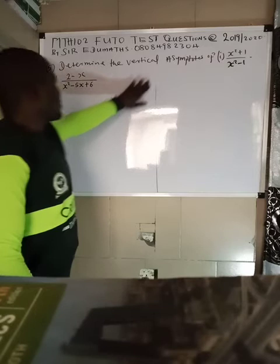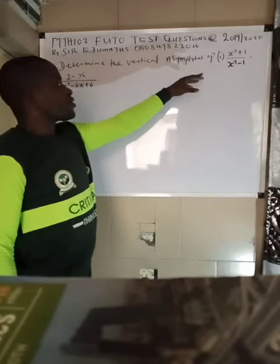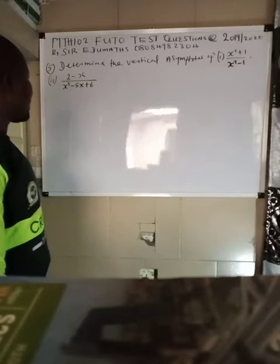We are still on photo test questions as of 2019/2020. Today we'll be looking at the fifth question which said: determine the vertical asymptotes of (x² + 1)/(x² - 1), and (2 - x)/(x² - 5x + 6). Please, if you have not subscribed to our YouTube channel, please do subscribe to Sir Edumaths YouTube channel.